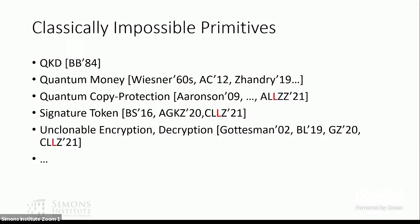Examples include the famous quantum key distribution by Bennett and Brassard, quantum money first proposed by Wiesner back in the 60s and later published in '83, and also quantum copy protection first proposed by Aaronson — and there are many more applications.